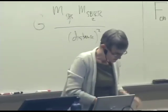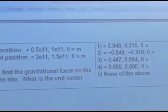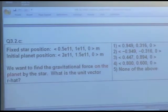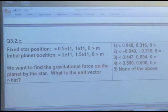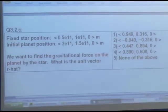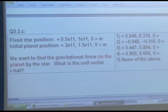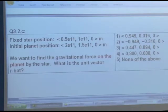Okay. So let's see if we can calculate a gravitational force. So if we have some positions, a star and a planet, we want to find the gravitational force on the planet by the star. We need to find the unit vector R hat. So what is the unit vector R hat for this particular situation? Actually let's read our diagram.